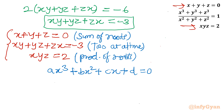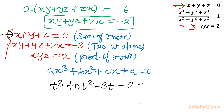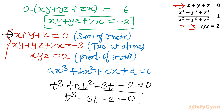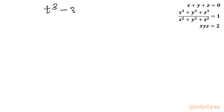We can now frame the cubic equation directly. Writing t³: the sum of roots is 0 so the t² coefficient is 0, giving plus 0·t². The sum of roots taken 2 at a time is negative 3, so we write minus 3t. The product of roots is 2, so the constant term is minus 2. The equation is t³ minus 3t minus 2 equals 0, whose roots are x, y, z.